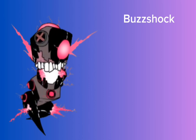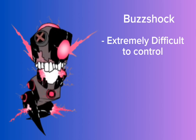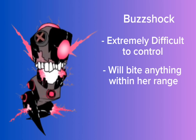Next one is Buzzshock, and this one — how do you even try to control this one? I'm completely confused. It's literally said that it's difficult to control, which if you look at her, yeah, I can see why. It has one eye, no arms, and it's completely screwed up. It's also the main reason for something bad happening that I will talk about later. She'll pretty much also bite anything that comes near her mouth, and given that she is a Nosedinean, that's not very good — probably like getting tased, but worse.